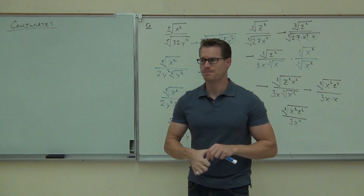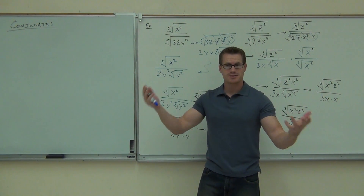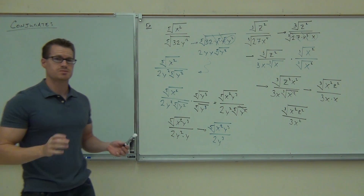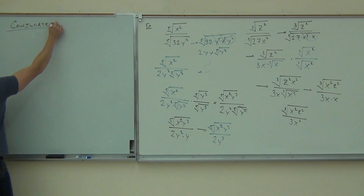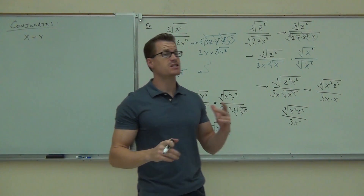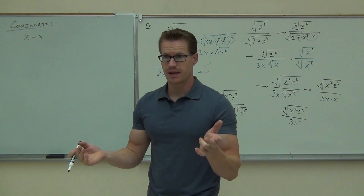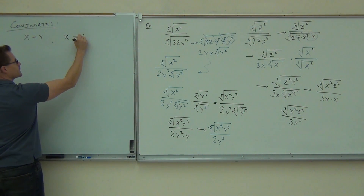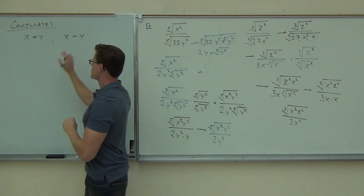The last thing we're going to talk about in this section is that word up there — conjugates. Here's what a conjugate means in general: if you have x plus y, a conjugate is a very simple idea. You take the same exact expressions but you change the sign in the middle. So if you have x plus y, the conjugate would be x minus y. And if you had x minus y, the conjugate would be x plus y. All it says is you change the sign in the middle — these two things are conjugates.